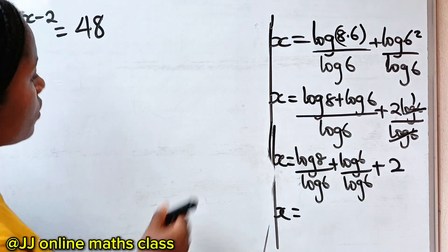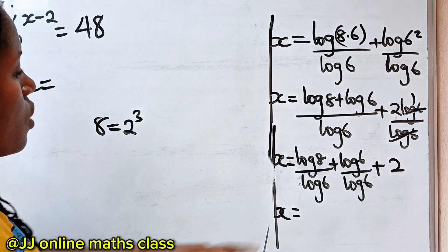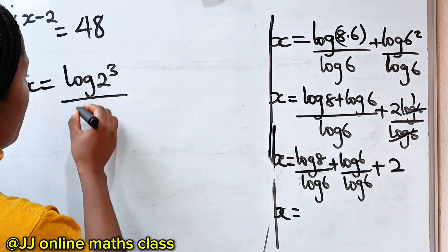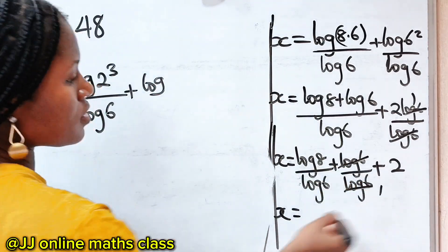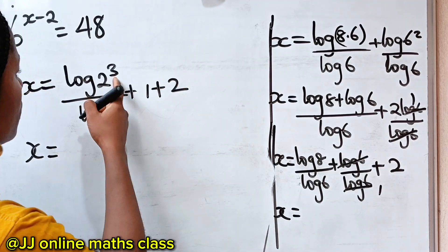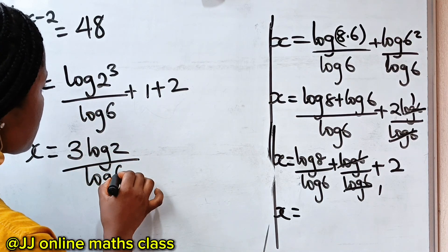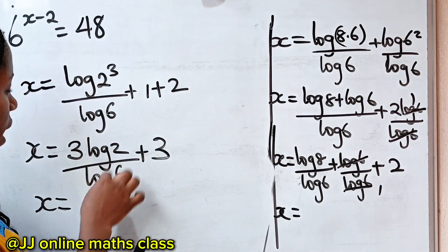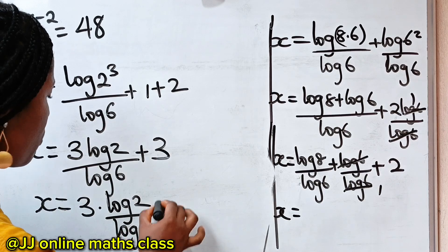Now recall that 8 is equal to 2 to the power of 3. So we can write this as log of 2 to the power of 3 divided by log 6. Log 6 divides itself to give us 1, so we have 1 plus 2. The 3 comes down to multiply log 2, giving us 3·log 2 divided by log 6 plus 1 plus 2, which gives us 3. So x is equal to 3·log 2 divided by log 6 plus 3.